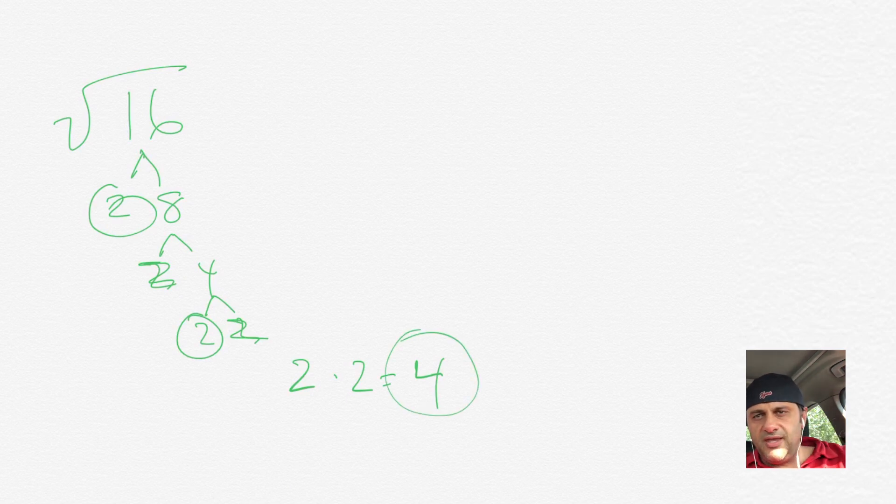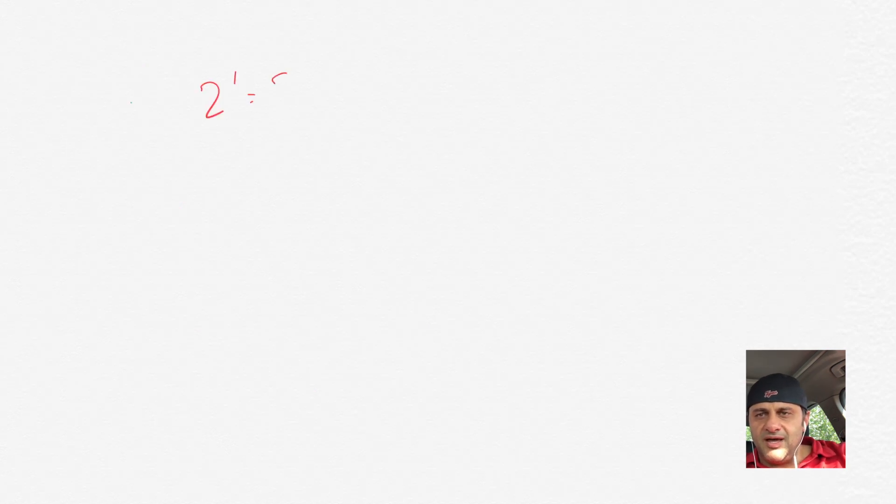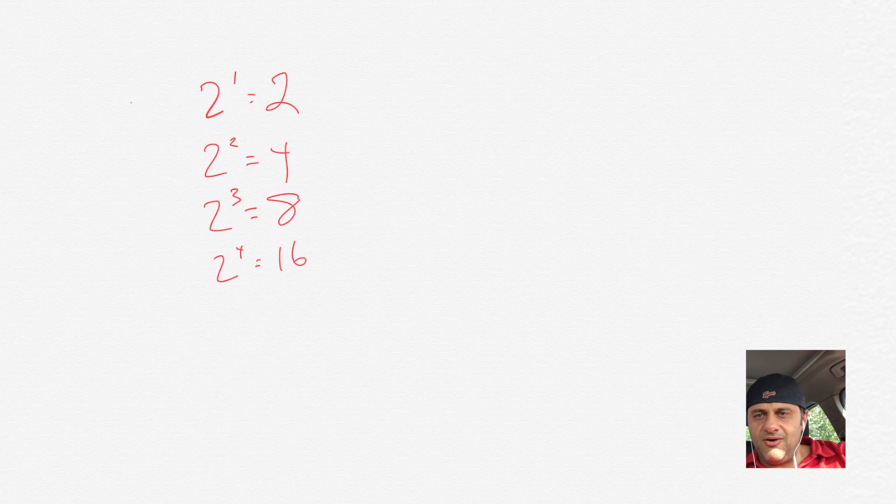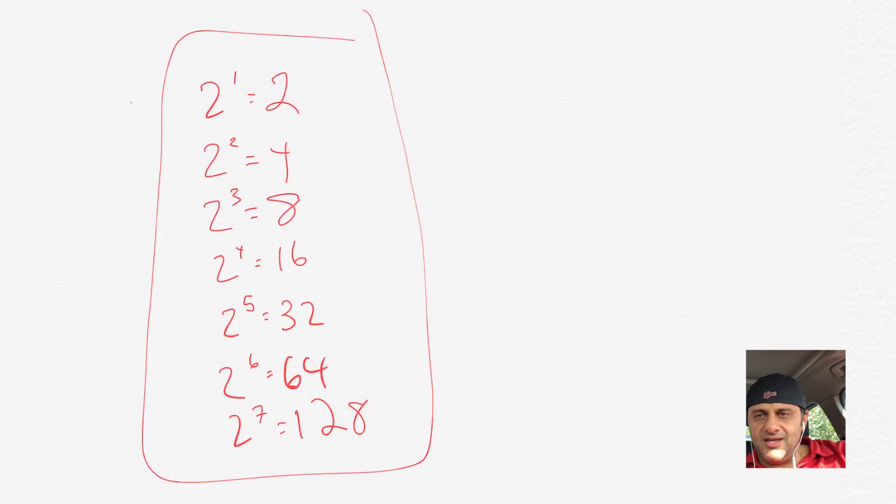It's good to know the squares of 2. So here's a good opportunity to practice some of them. 2 to the 1st is 2. 2 squared is 4. 2 cubed is 8. 2 to the 4th power is 16. 2 to the 5th is 32. 2 to the 6th is 64. 2 to the 7th is 128. You should know those. That'll help you a lot in simplifying square roots.